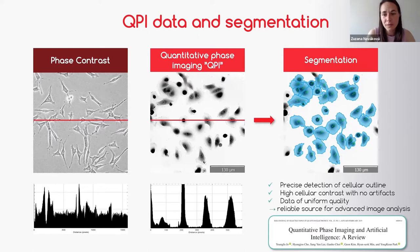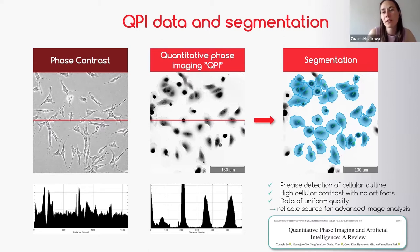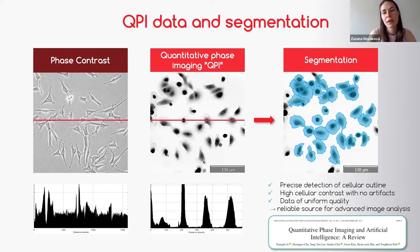QPI data are of uniform quality, because they come from the intrinsic property of the cells — from the refractive index, from the cell dry mass. So they give you uniform quality over time. They are not dependent on the illumination intensity used during the experiment, nor on the concentration of the label used. You always get the same quality throughout the experiments. Therefore, they represent a reliable source for advanced image analysis.